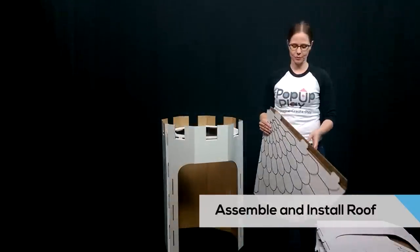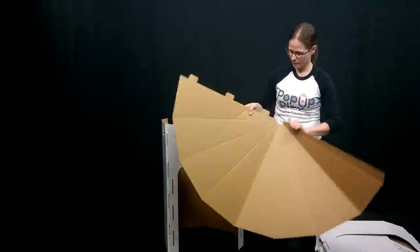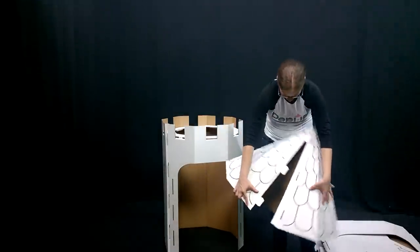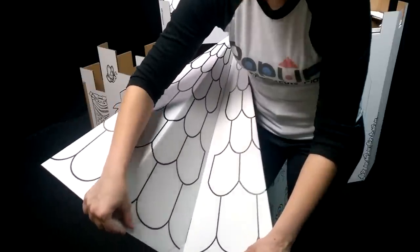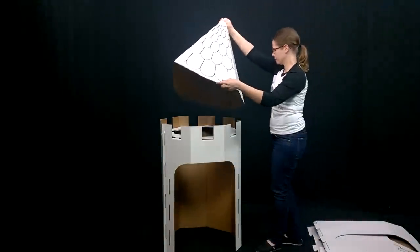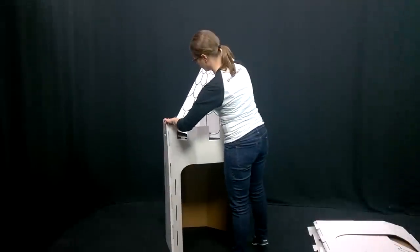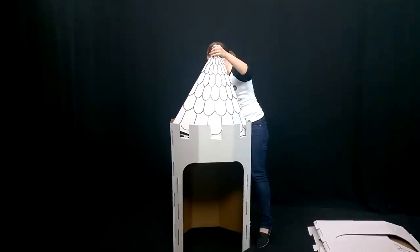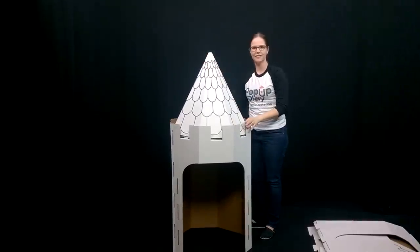Next you'll want to assemble the tower roof. Double check that all the creases are ready to go. I find it easiest to grab the roof by the edges and insert. Now the roof is ready to put on the tower. There we go.